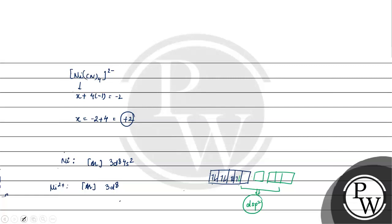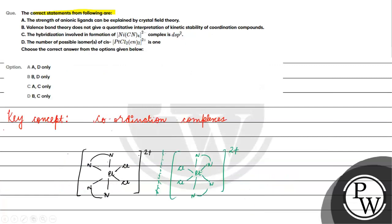Hybridization is dsp2, shape or structure basically will be square planar, right? So option C is correct. Here, option D is incorrect.